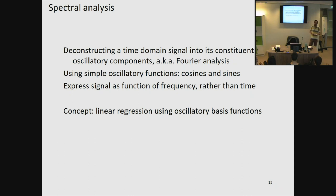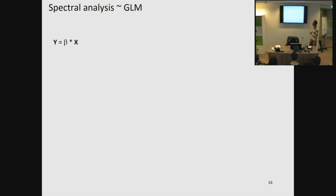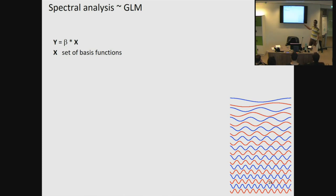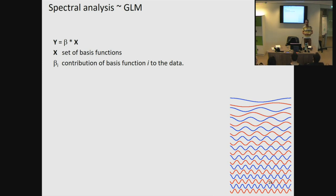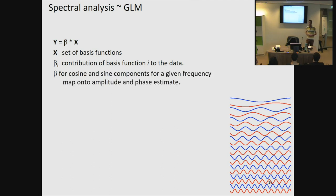We can also think of spectral analysis in terms of linear regression — as linear regression using oscillatory basis functions. In linear regression, we try to fit a set of beta weights to a design matrix in order to optimally explain the variance in the signal. In our case, the design matrix consists of cosines and sines of different frequencies. The beta weights for each basis function tell you how much that basis function contributes to the data. If we combine the beta weights for the sine and cosine of each frequency, we can get the phase and amplitude estimate for that frequency.